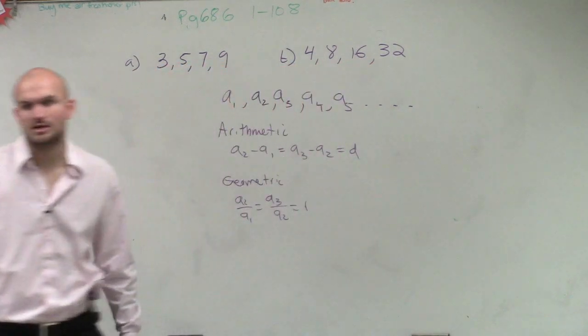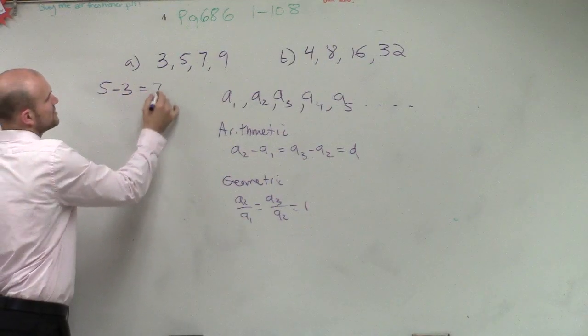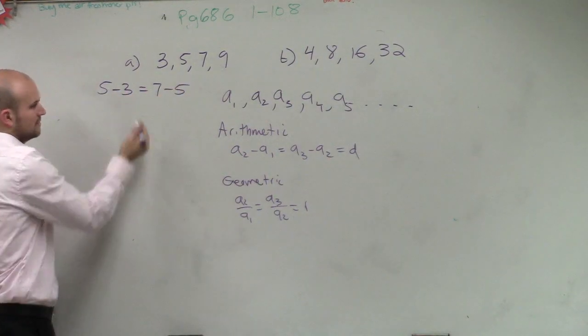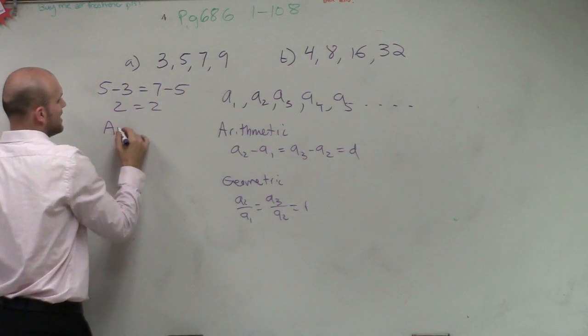So I think the easiest one is always to determine: is 5 minus 3 equal to 7 minus 5? Yeah, 2 equals 2. So therefore, this is arithmetic.